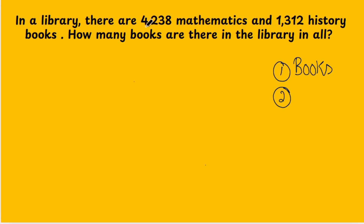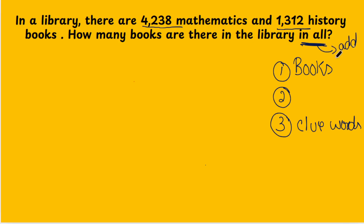The third step is to find the clue words. The question asks: how many books are there in the library in all? The clue word you can find here is 'in all,' which means addition. The clue word is 'in all' — this is the third step. The fourth step: add the numbers.